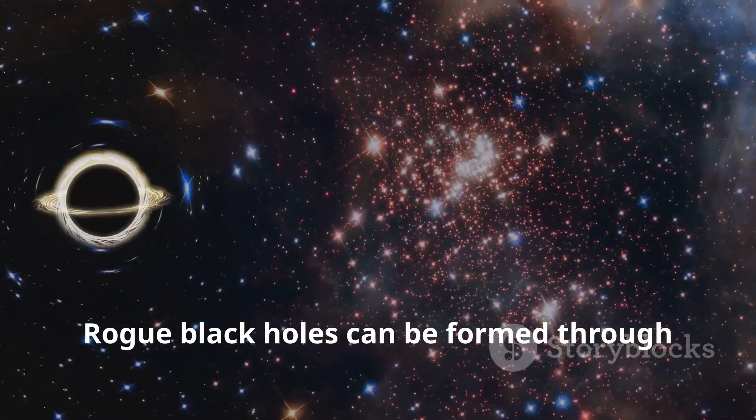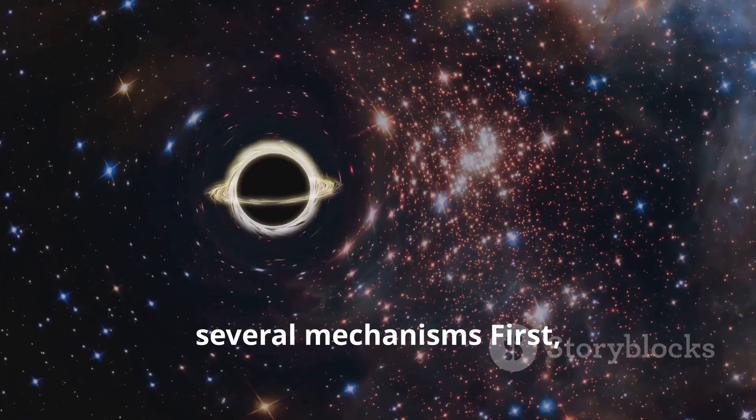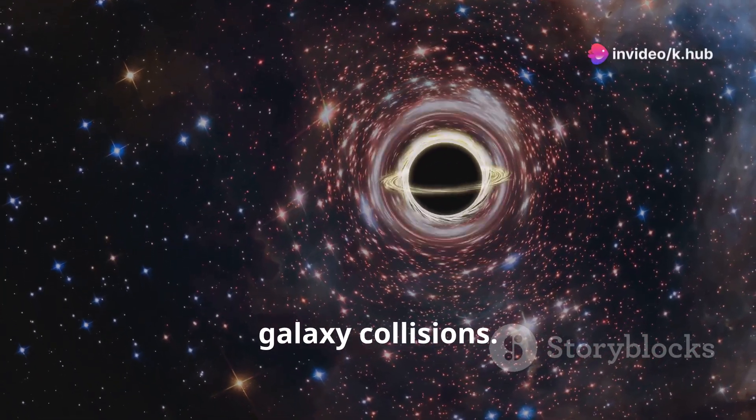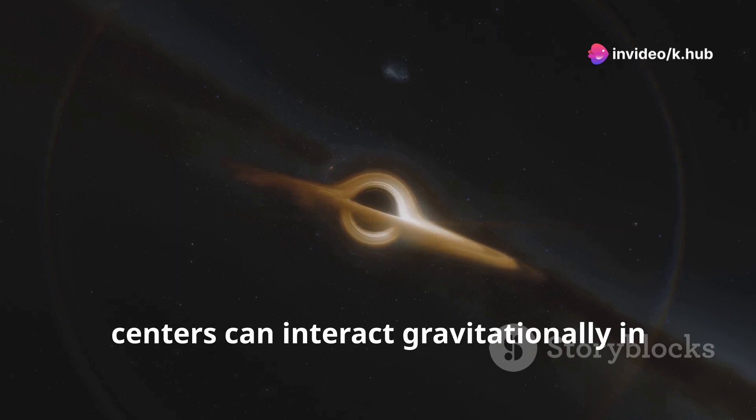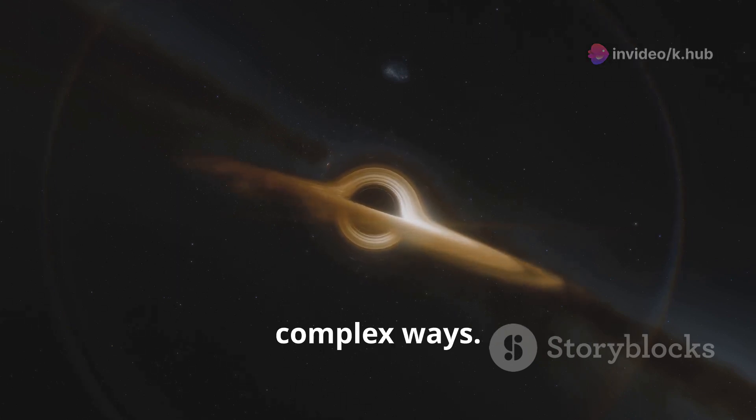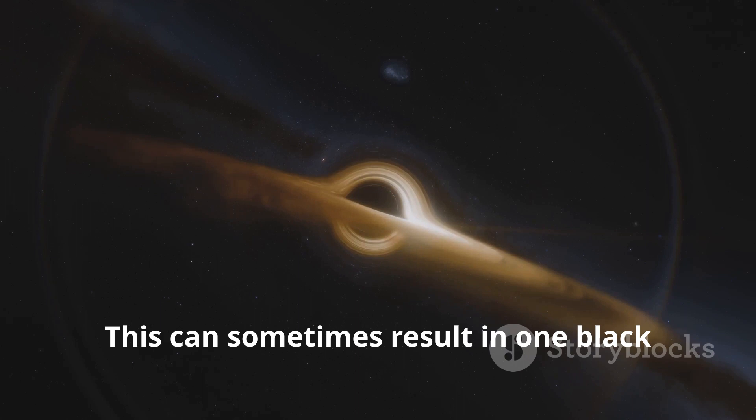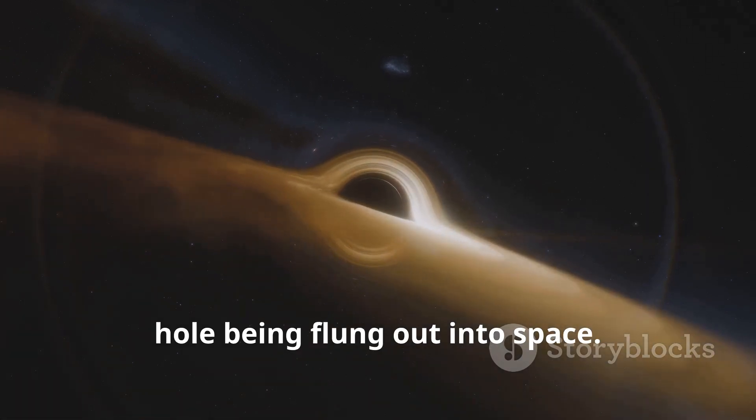Rogue black holes can be formed through several mechanisms. First, galaxy collisions. When galaxies collide and merge, the supermassive black holes at their centers can interact gravitationally in complex ways. This can sometimes result in one black hole being flung out into space.